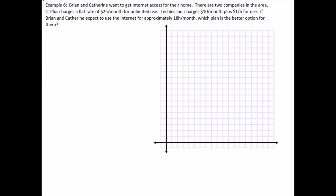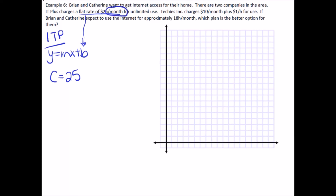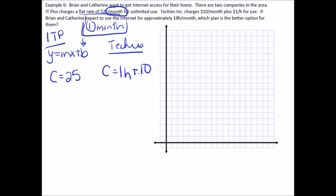Example 6: Brian and Catherine want internet access. There are two companies — IT Plus charges a flat rate of $25 a month, so in y equals mx plus b form, $25 is the b value, giving C equals 25. Techies Inc. charges $10 a month flat fee plus $1 per hour for use. If they expect to use the internet for approximately 18 hours per month, which plan is the better option?